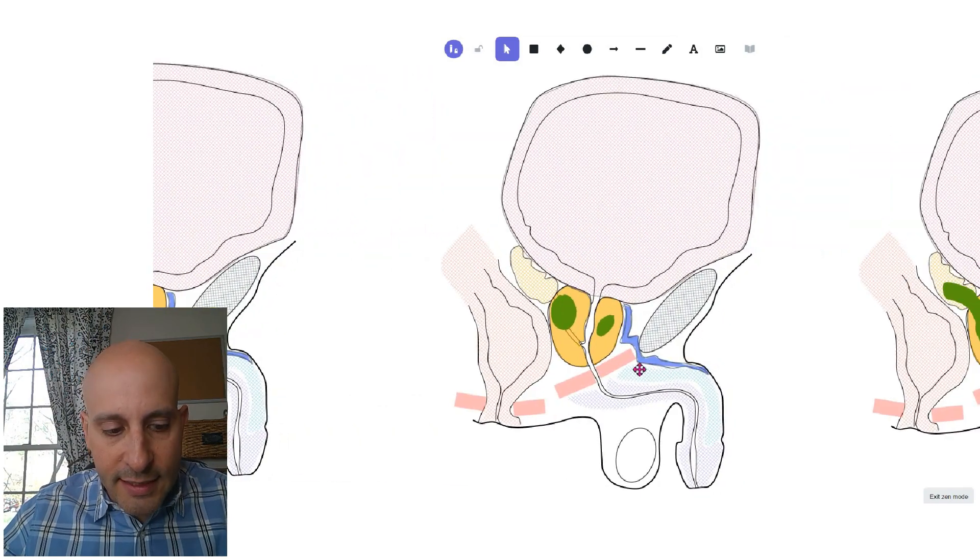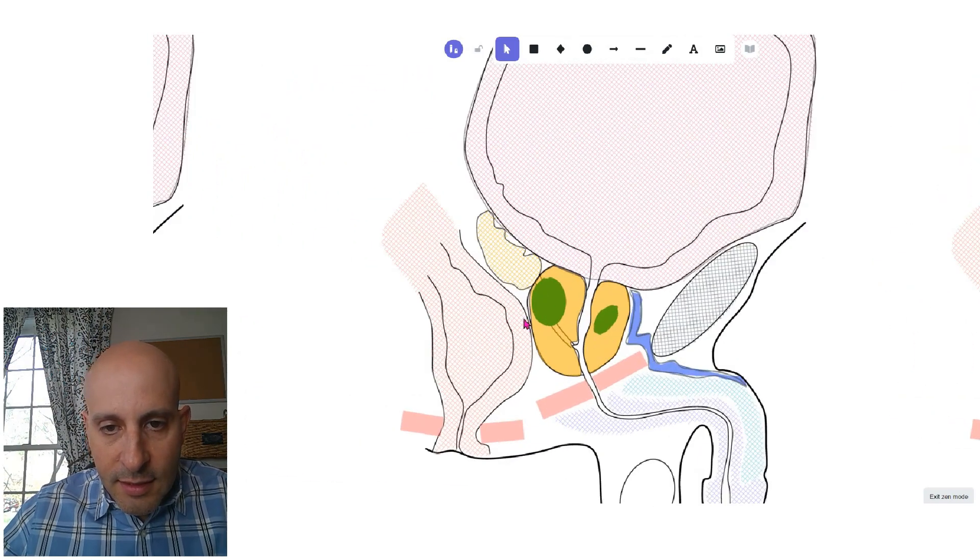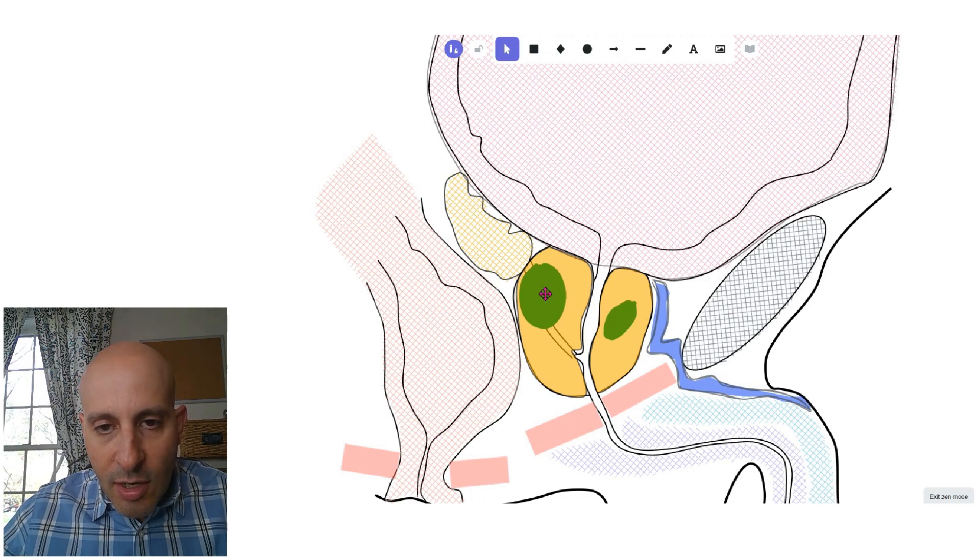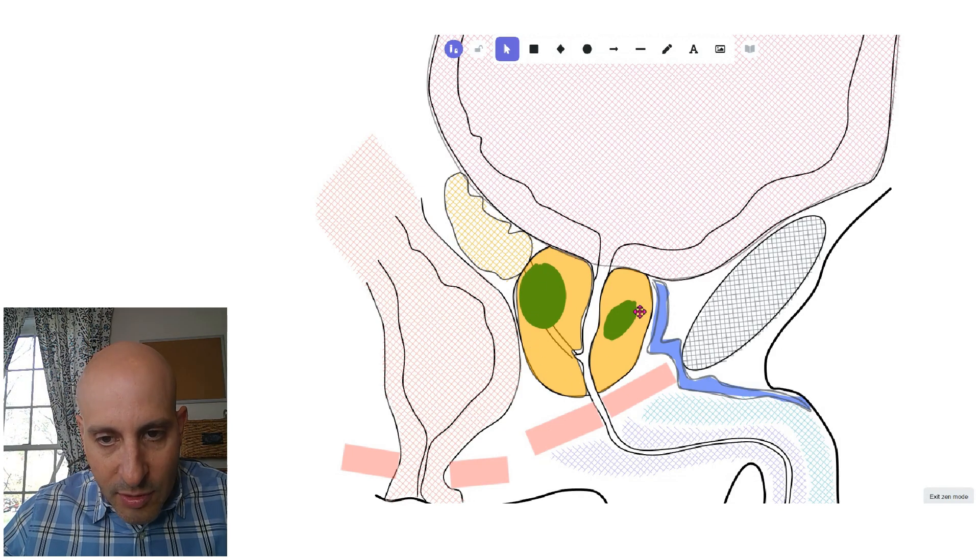Cancers that are contained, the cancers represented here in green, are completely inbounds. Never goes outside that outer line, which is called the capsule of the prostate.